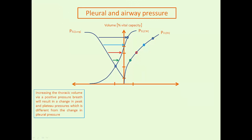Increasing the thoracic volume by a positive pressure breath will result in a change in peak and plateau pressures, which is different from the change in pleural pressure. These are static volume changes, and the summative respiratory system compliance — the static compliance of the lung and chest wall together — says nothing about the amount of pressure required to affect gas flow. This elastance curve of the respiratory system is essentially like a series of plateau pressures.